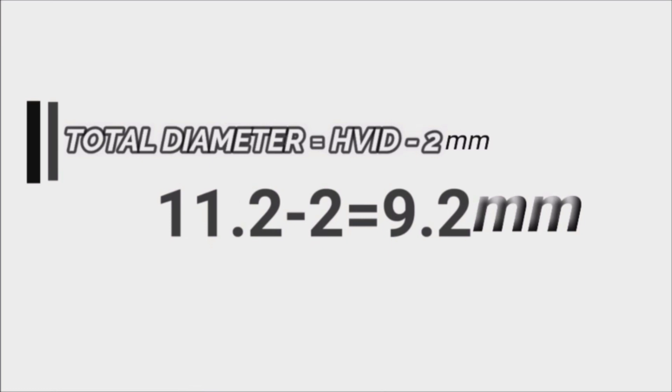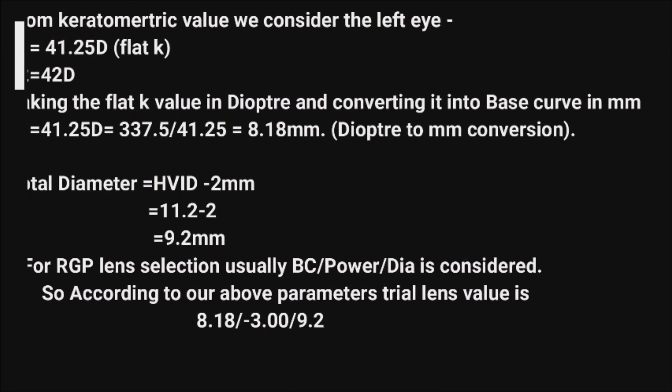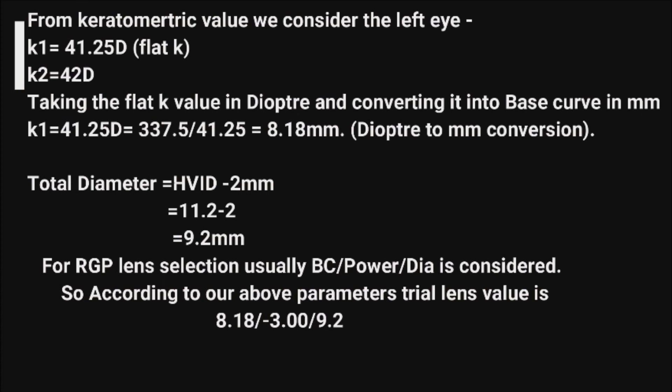Now the total diameter, which is HVID minus 2 mm, equals 9.2 mm. This slide shows the calculations of the parameters for the trial lens fit. Since we didn't find any trial lens according to our required parameters, we opt for the first trial.